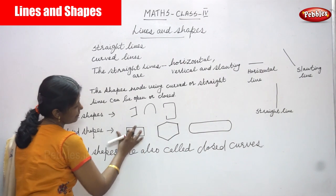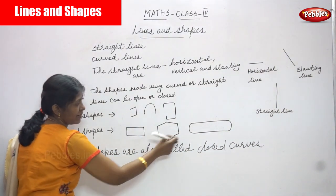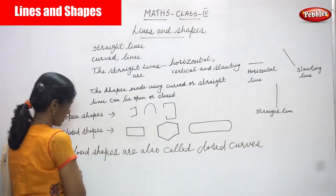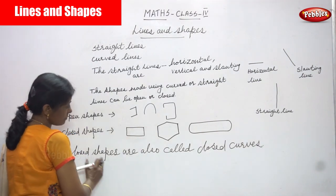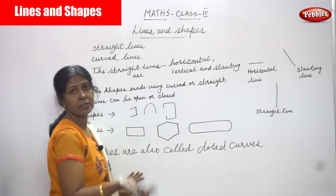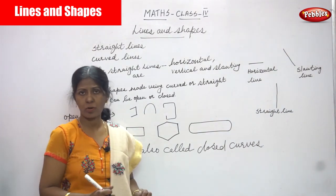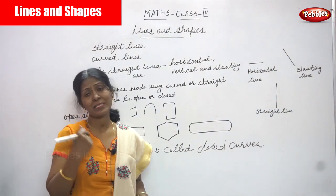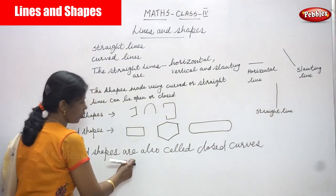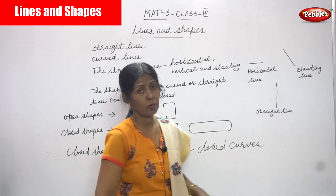Closed shapes are completely covered. These are examples of closed shapes. Closed shapes are also called closed curves.